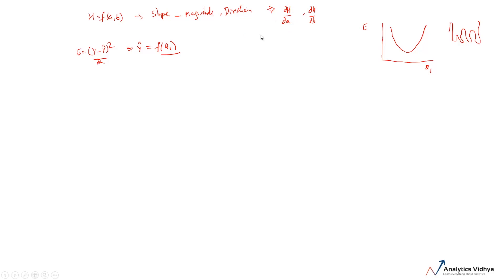The slope is also called a gradient. Let's see how we can use this gradient to reach a minimum. Since e is a function of y-hat and y-hat is a function of theta one, e is ultimately some function g of theta one — e changes when theta one changes. What we're interested in is: if this is the top of the mountain, what is the change in e when we make a small change in theta one? That is the slope. If you are at a point on the right side, the slope ∂e/∂theta one is positive.